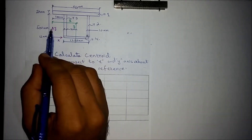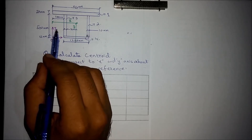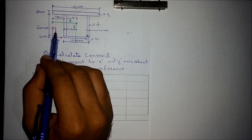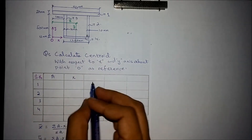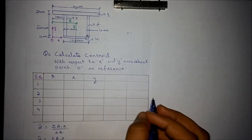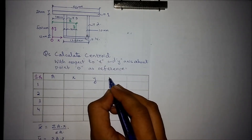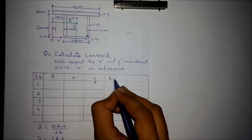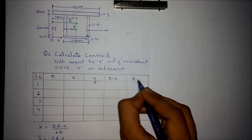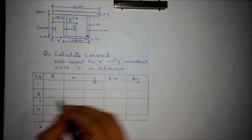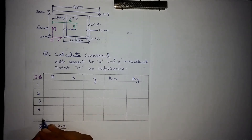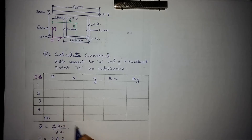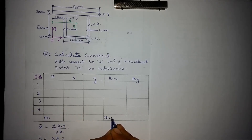The distance with respect to y will be y. We organize this into a table with A multiplied by x and A multiplied by y for each shape. Upon summing all values you will find the summation of area and summation of area times y.